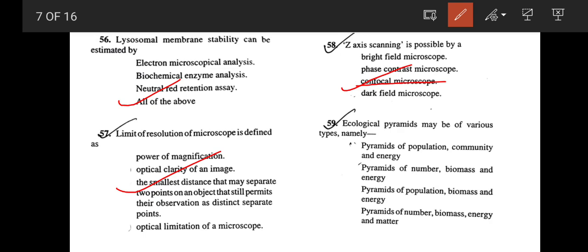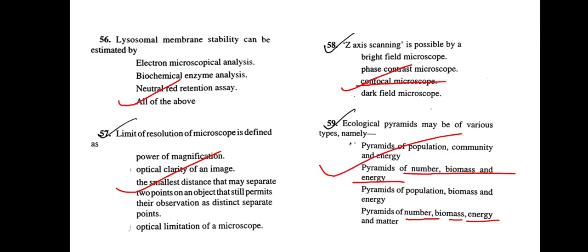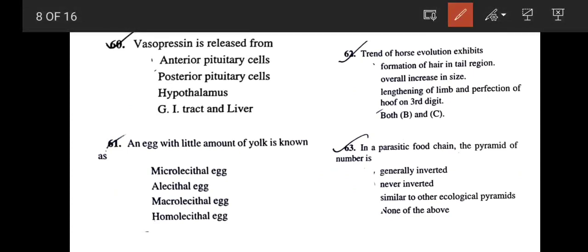Next question: Ecological pyramids may be of various types. Which are the types? There are three types of ecological pyramids: pyramid of number, pyramid of biomass, and pyramid of energy. So correct answer would be pyramid of number, biomass and energy, option B. Next: Vasopressin is released from? Vasopressin is produced in the hypothalamic nuclei but it is released from our posterior pituitary where it is stored. Correct answer should be posterior pituitary. Next: An egg with a little amount of yolk is known as microlecithal egg. Very easy one.